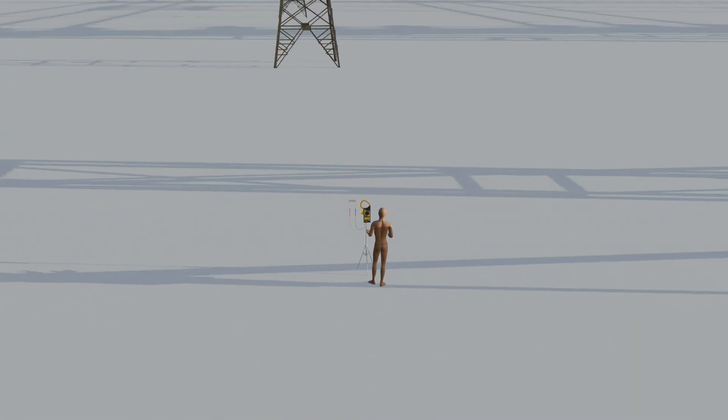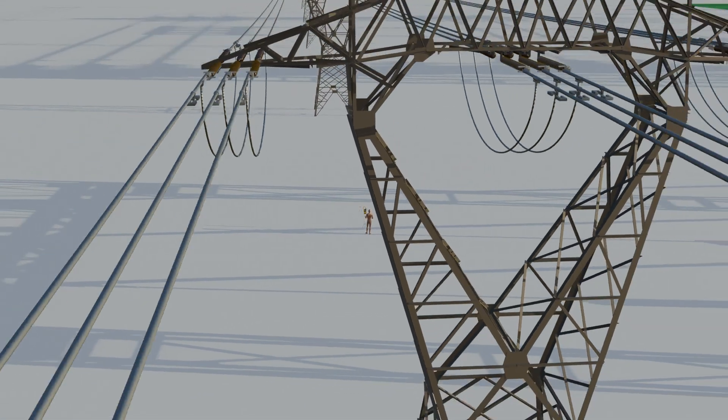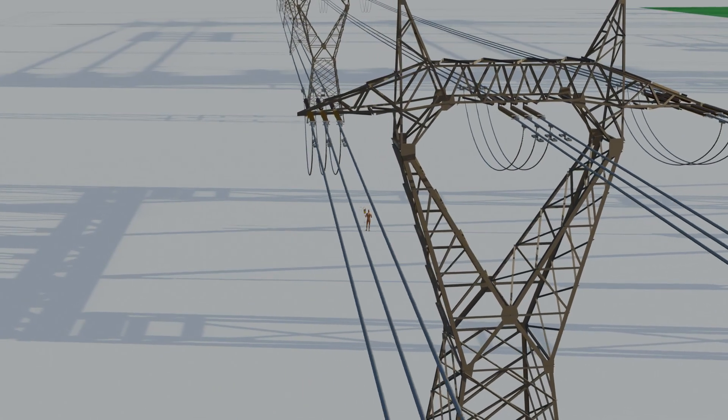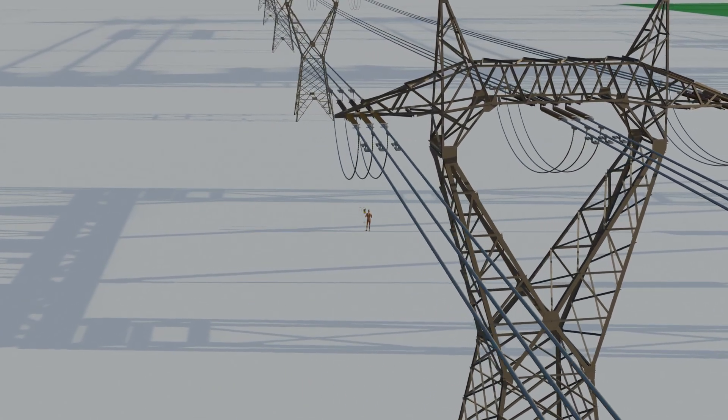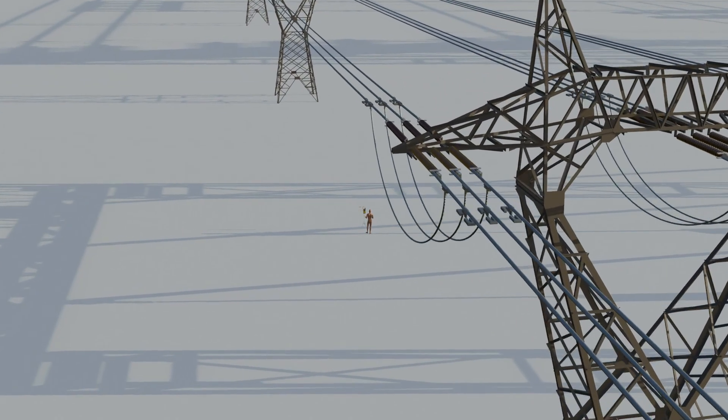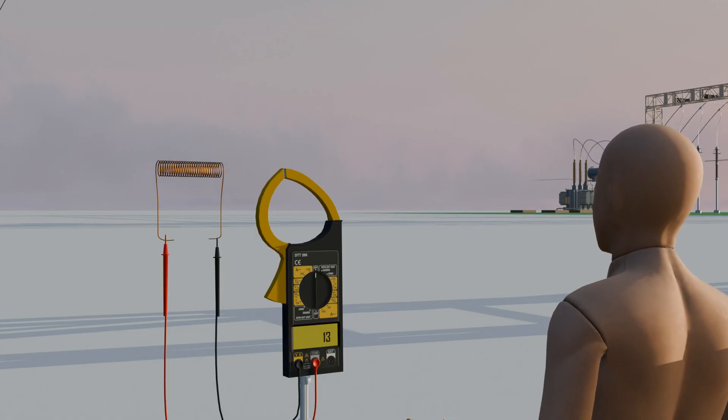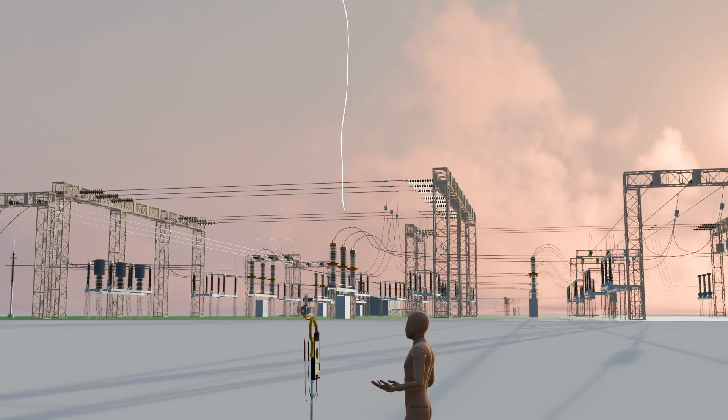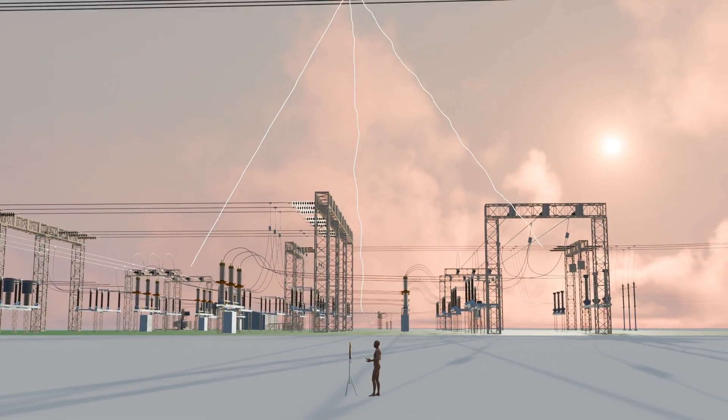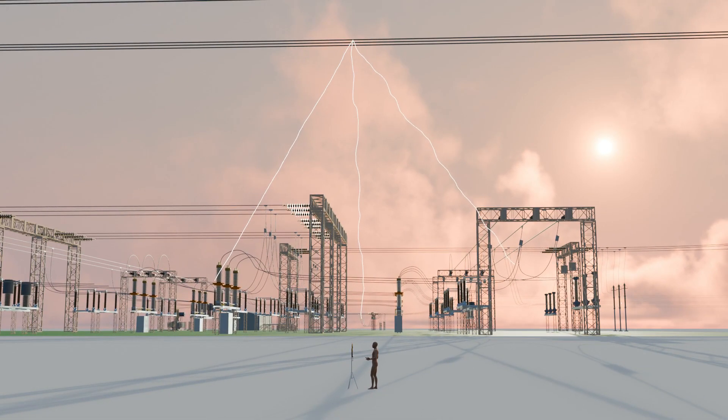Now place this setup close to a high voltage transmission line. It's important to not climb the tower, simply stand on the ground. The line should be at least 220 kilovolts or 440 kilovolts. You will notice that the multimeter begins to show a voltage. This indicates that electrical energy is traveling through the air and reaching the earth, essentially a form of wireless electricity transmission.